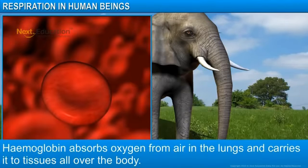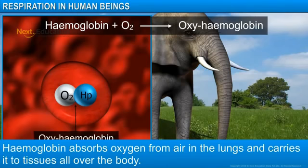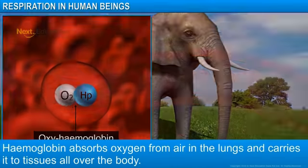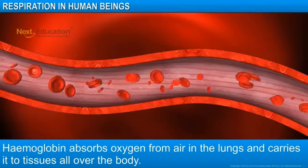Hemoglobin, a respiratory pigment present in red blood cells, has high affinity for oxygen. This pigment binds with oxygen from the air in the lungs and forms oxyhemoglobin. Later, through oxyhemoglobin, oxygen is distributed to all the tissues in the body.